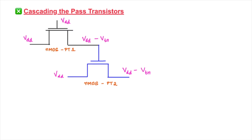What this means is that the drain terminal of one transistor cannot be connected to the gate terminal of another transistor — this is the cascading problem. In the first part of the video we will understand the cascading problem: how not to cascade pass transistors, and what is the correct way of cascading them. We are not supposed to connect in this way — i.e., connecting one drain terminal to the gate terminal of the other transistor.